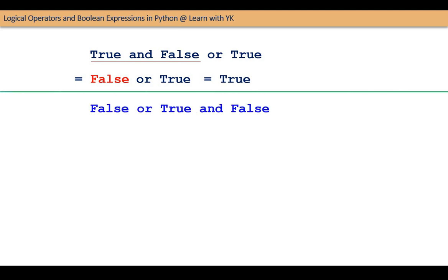Let us see another example. In this expression also, AND will be evaluated first. So the expression becomes false OR false, which evaluates to false.